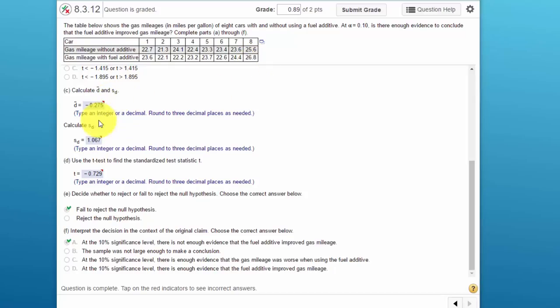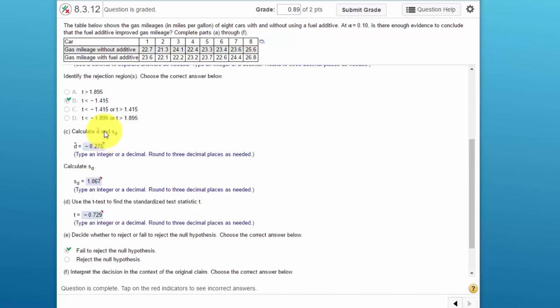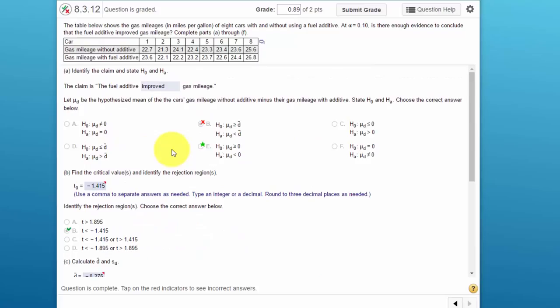Let's start again by identifying the null and alternative. You have to get that right in order to run the test right in StatCrunch or Excel or anywhere, and also to be able to come up with the correct conclusion.